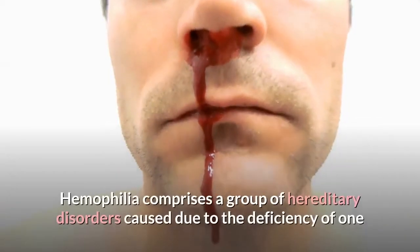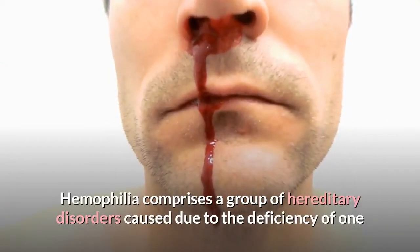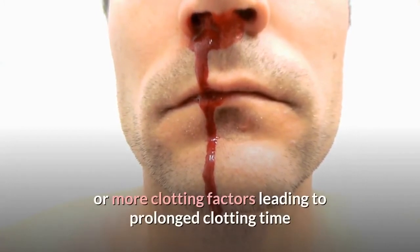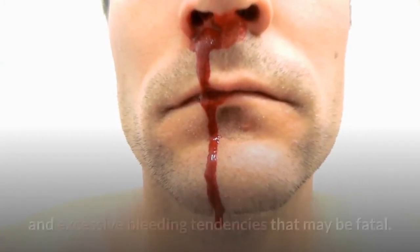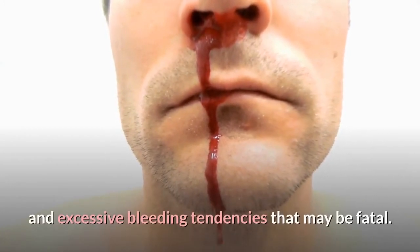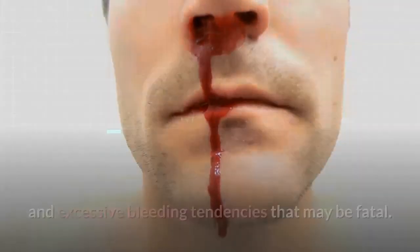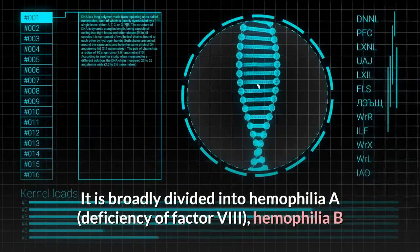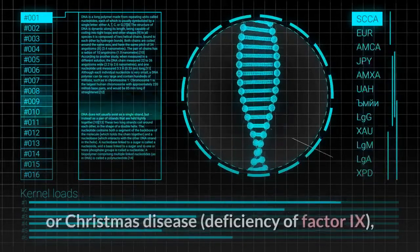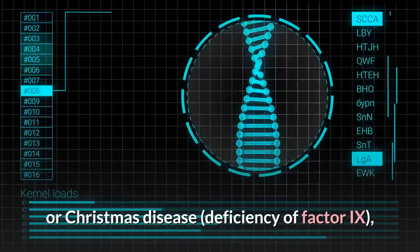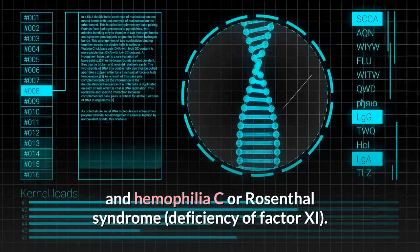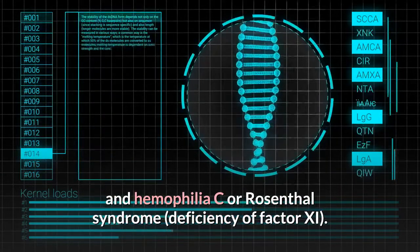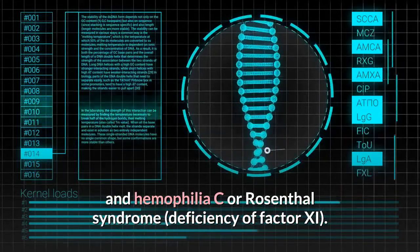Hemophilia comprises a group of hereditary disorders caused due to the deficiency of one or more clotting factors, leading to prolonged clotting time and excessive bleeding tendencies that may be fatal. It is broadly divided into hemophilia A — deficiency of factor VIII; hemophilia B or Christmas disease — deficiency of factor IX; and hemophilia C or Rosenthal syndrome — deficiency of factor XI.